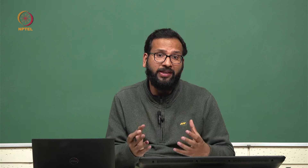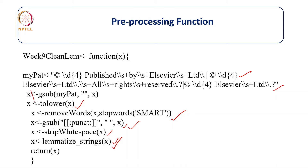One important thing about the function is that if you exclude intermediate steps and just call the final assignment, it will only give you the output of the last operation. So to run all operations, each operation must be assigned to the data properly.